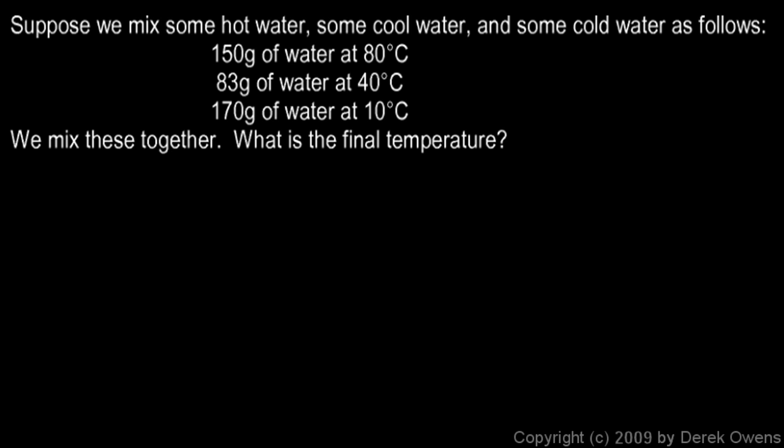All right, here's a slightly more difficult example. Suppose we mix three different amounts of water, some hot water, some cool water, and some cold water. So we have our hot and our cold and also an intermediate temperature, and specifically this is what we have.